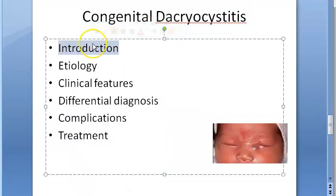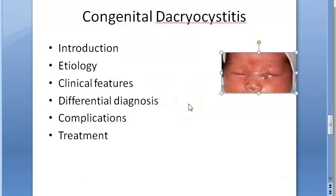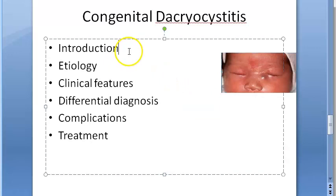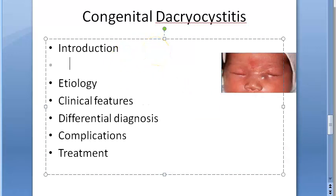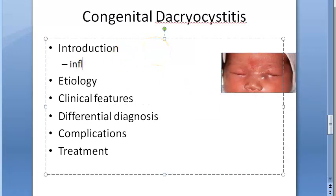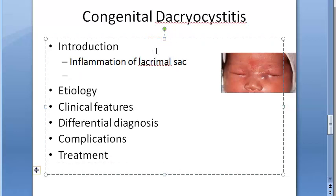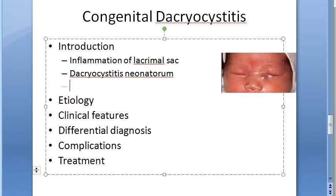We are looking at congenital dacryocystitis: chronic inflammation of the lacrimal sac occurring in newborn infants. It is known as dacryocystitis neonatorum or infantile dacryocystitis. So it is inflammation of the lacrimal sac, and as it occurs in neonates, it is called dacryocystitis neonatorum or infantile dacryocystitis.